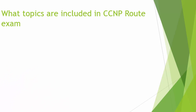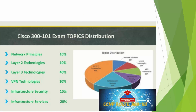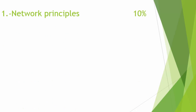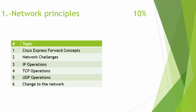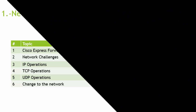We're going to be discussing the topics that are going to be included in the CCMP Route test. It's going to be Cisco 300-101, and the topics are going to be: Network Principles 10%, Layer 2 Technologies 10%, Layer 3 Technologies 40%, VPN Technologies 10%, Infrastructure Security 10%, and Infrastructure Services 20%. The place we're going to be spending most of our time is going to be Layer 3 Technologies. Under Network Principles, we're going to be talking about Cisco Express Forwarding concepts, Network Challenges, IP operations, TCP and UDP operations, the differences between TCP and UDP, and changes to the network.